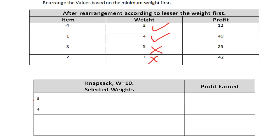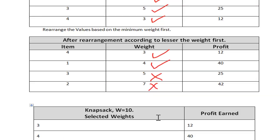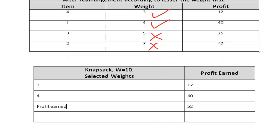So what is the total profit? By inserting weight 3 I earned some profit, and by inserting weight 4 I earned profit 40. The total profit earned by inserting these two items is 52. This is the end of the minimum weight approach — we inserted the items with the minimum weight.